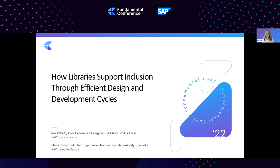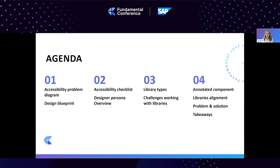Our agenda for today will cover an accessibility problem diagram for designers and how that contributes to the design blueprint. We'll then talk about design annotation, how the checklist helps with design annotation, an overview of a designer persona and how this persona would benefit from libraries, types of libraries that exist, the challenges of working with libraries, how an annotated component looks, how it fits into the library, the lines necessary between library types, what the problem is, what solution we're proposing, and the takeaways.